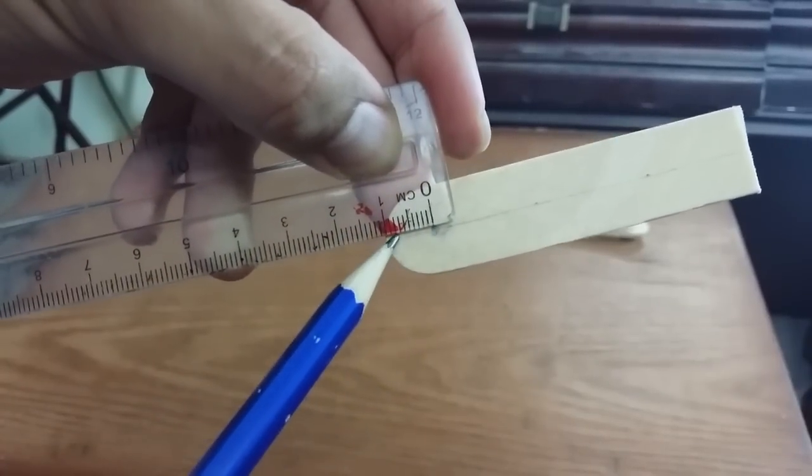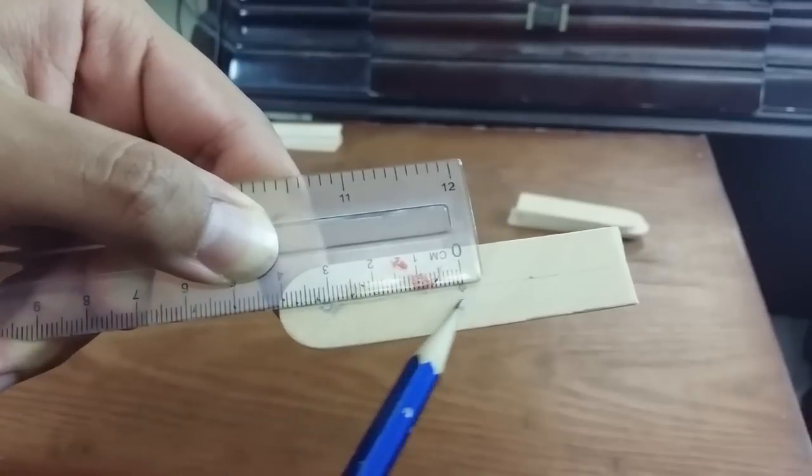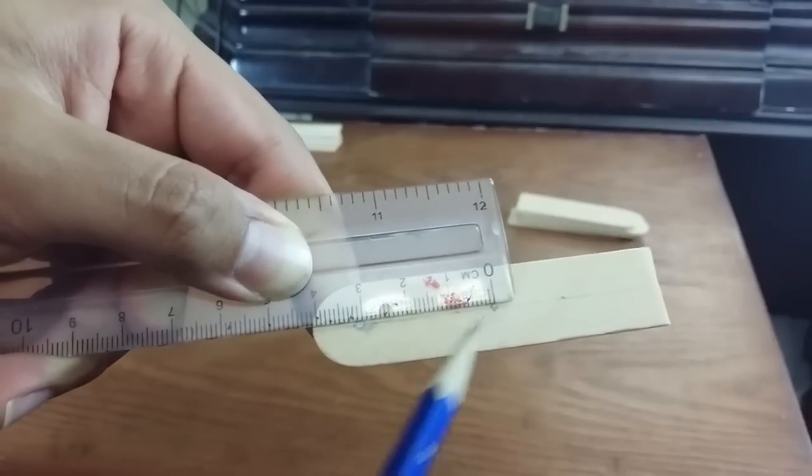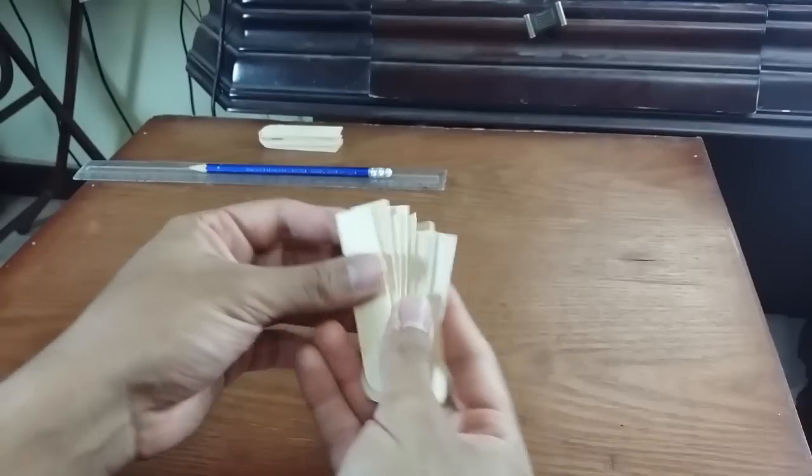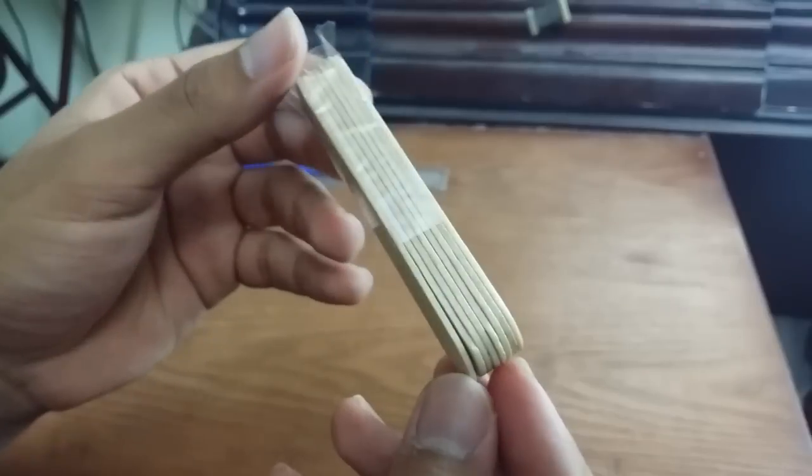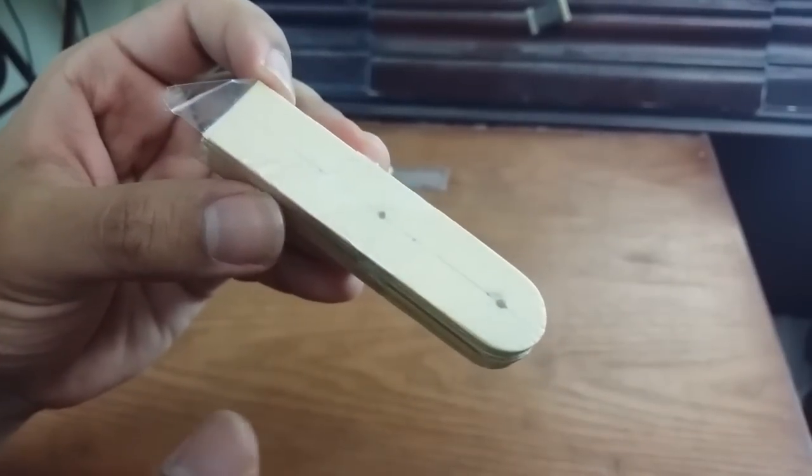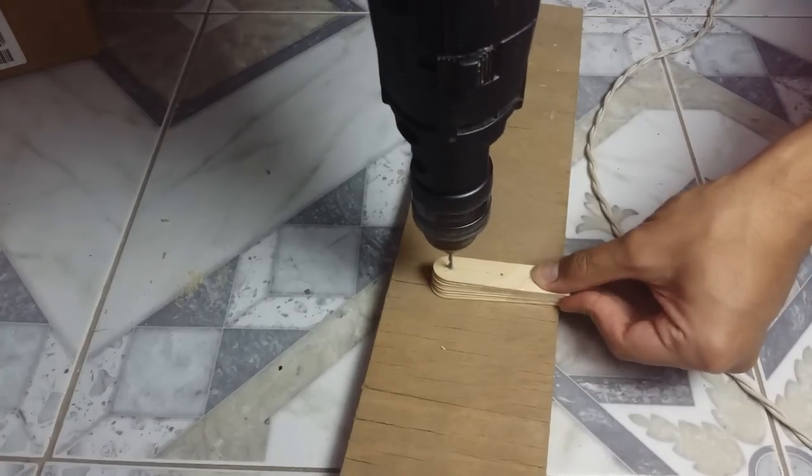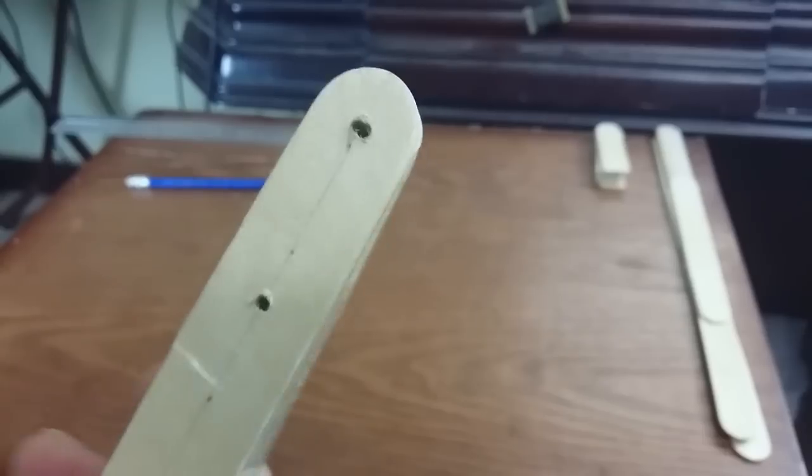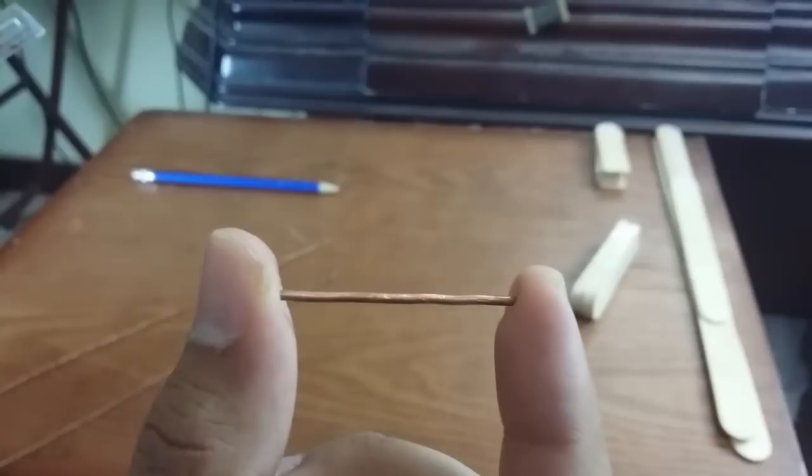Now draw a point one centimeter far from this side, right in the middle, and draw another point three centimeters far from the first point. Now put all the eight sticks together and tape them. Now it's time to dig two holes in this spot.